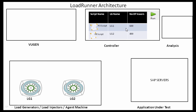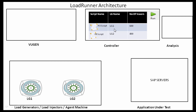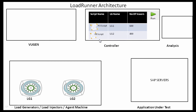Let's say one LG supports close to 600 users, so you cannot fit 1,000 users on one LG. Since one LG can support only 600 users, that's why we have two LGs. The 600 users will come from LG1 and the 400 from LG2. LGs are the machines that give these users — not the Controller. The Controller is only for configuring the number of users with which you are executing the script. The actual users come from the load generators. So we have two LGs: LG1 giving 600 and LG2 giving 400, which still has capacity for 200 more.